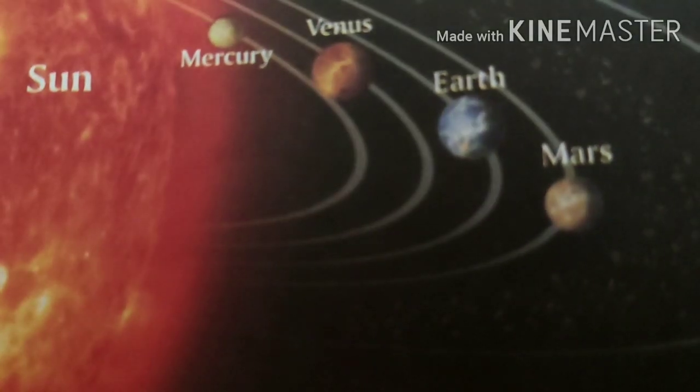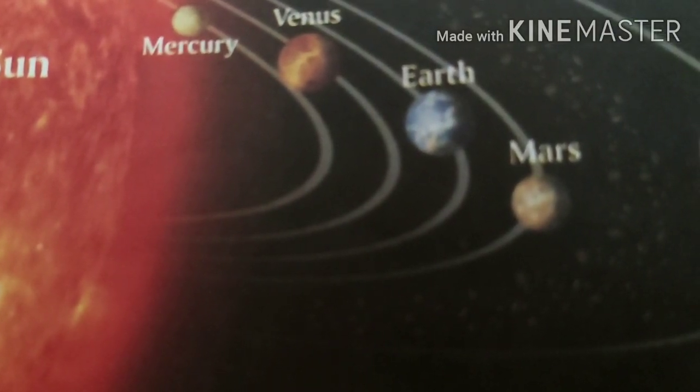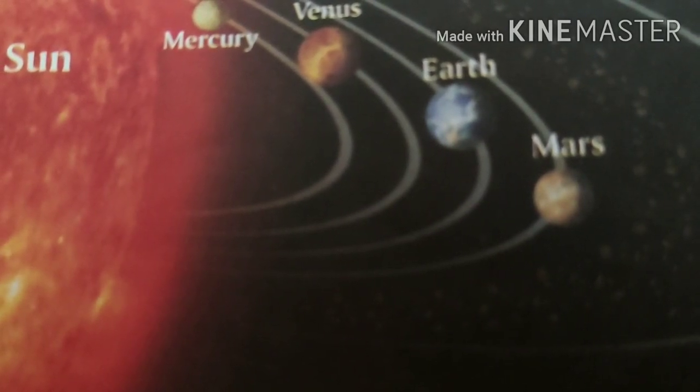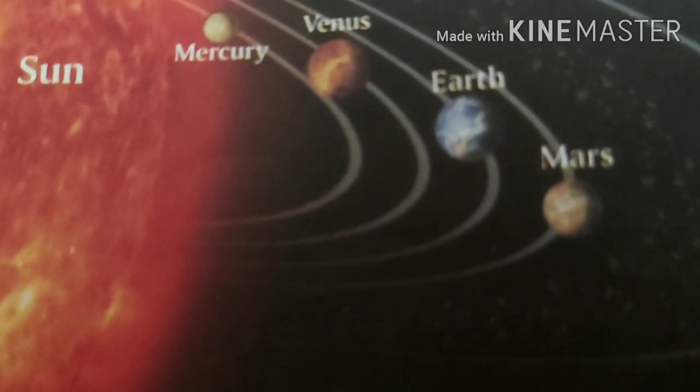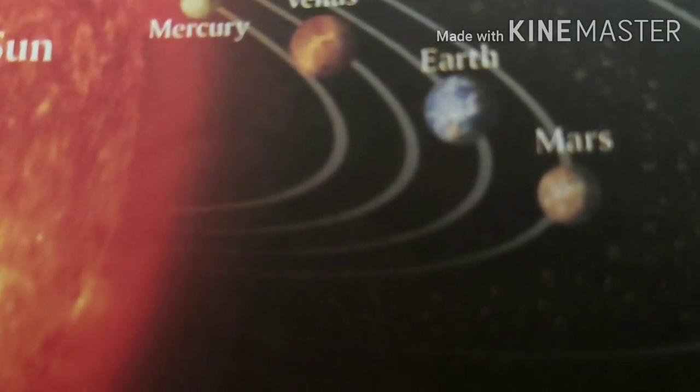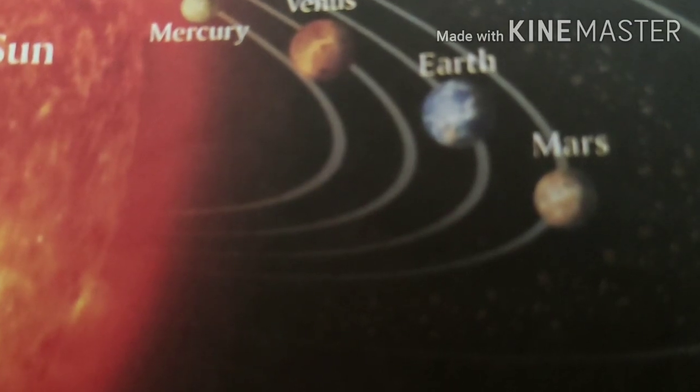Our solar system consists of eight planets: Mercury, Venus, Earth, Mars, Jupiter, Saturn, Uranus, and Neptune. The planets move around the Sun on fixed, elongated elliptical paths called orbits. The movement of a planet around the Sun is called revolution. Each planet has its own fixed orbit and also moves around its own axis, which is called rotation.